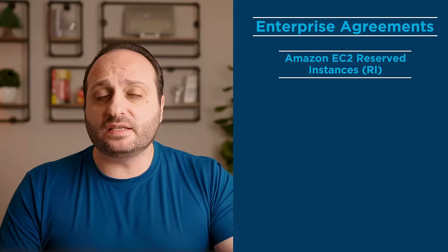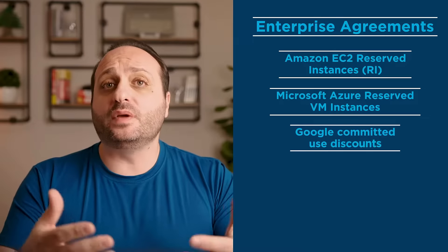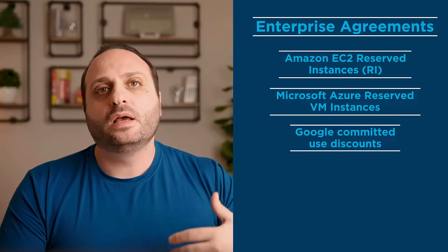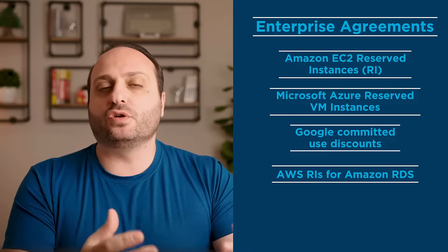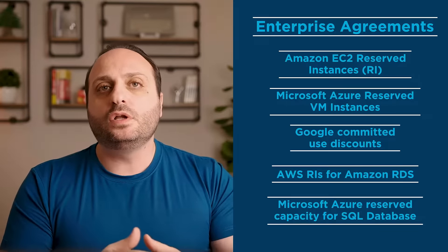You should also leverage different discount models that cloud providers offer. For example, AWS offers reserved instances, Azure offers reserved VM instances, and Google offers committed use. AWS also offers reserved instances for RDS, Azure offers reserved capacity for SQL, and so on. If you're not leveraging these discount models as part of architecting your workload, you're not properly optimizing.